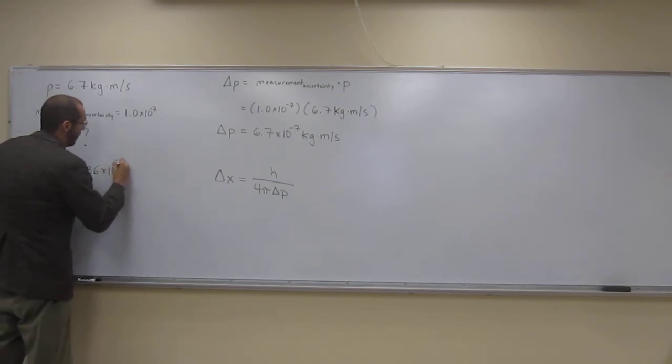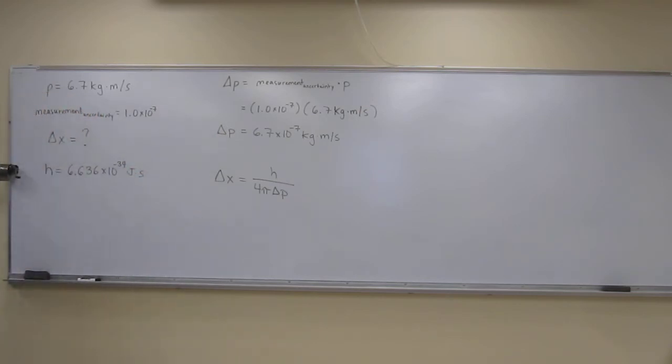6.626 times 10 to the negative 34th joule seconds. So remember the conversion between joules, kilogram meter squared per second squared. But in order to do these problems, it's easier if you rearrange this to be like one joule second squared equals one kilogram meter squared.